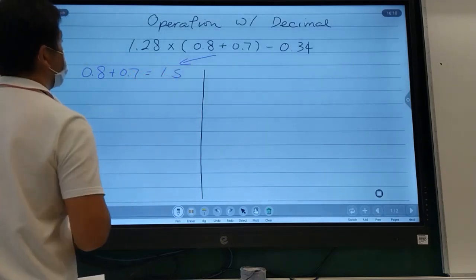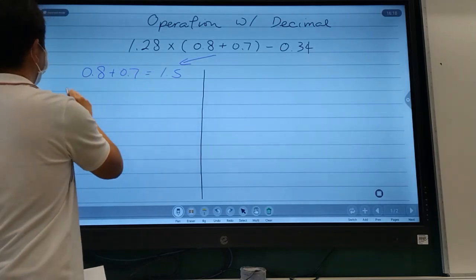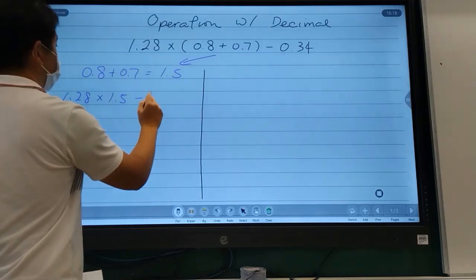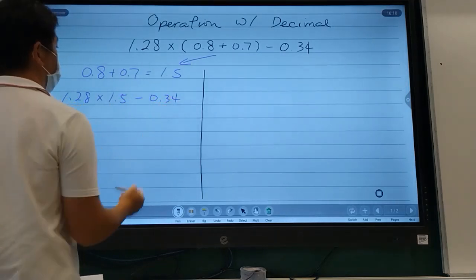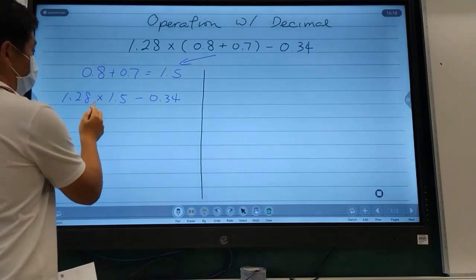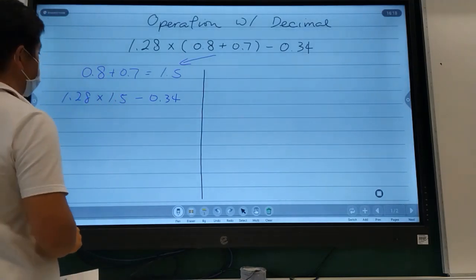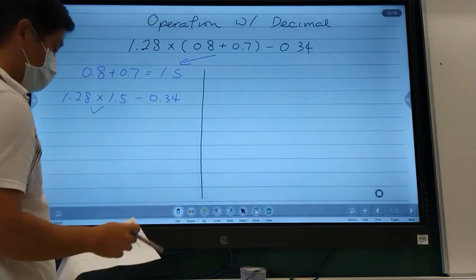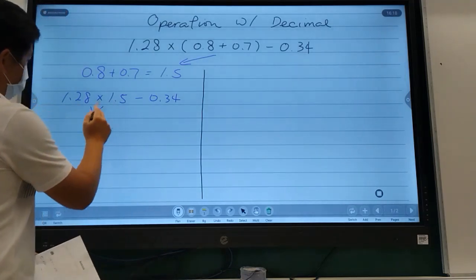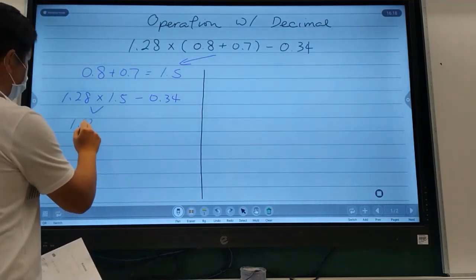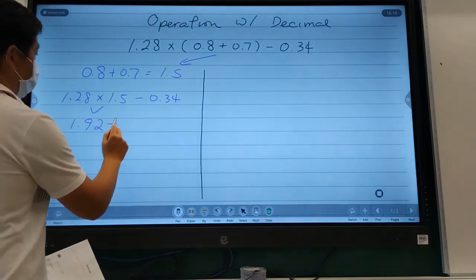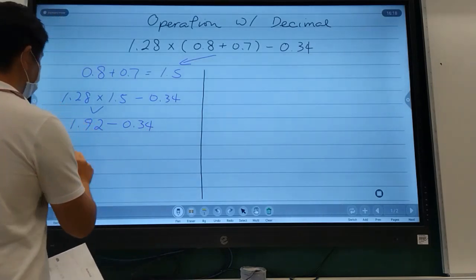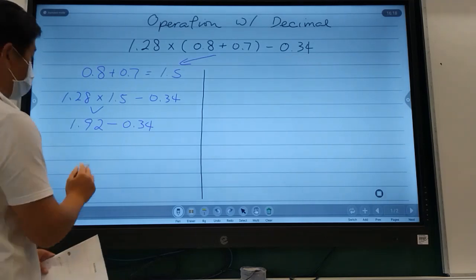The next thing I need to do is 1.28 times 1.5 minus 0.34. BODMAS says I need to do multiplication before subtraction, so let's do the multiplication first. I'm going to use my cheat notes. That would equal 1.92, and when you minus 0.34, you should get the answer 1.58.